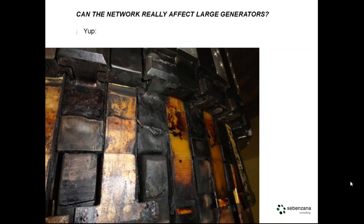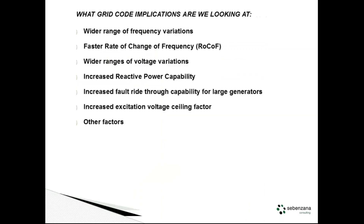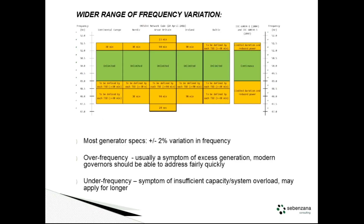I'm going to look through these implications from the grid code: the wider range of frequency variations, faster rate of change of frequency, a wider range of voltage variations, increased reactive power capability, increased fault ride-through capability requirements, and increased excitation voltage ceiling factor. I'll also look at a couple of other factors, starting with frequency variation.